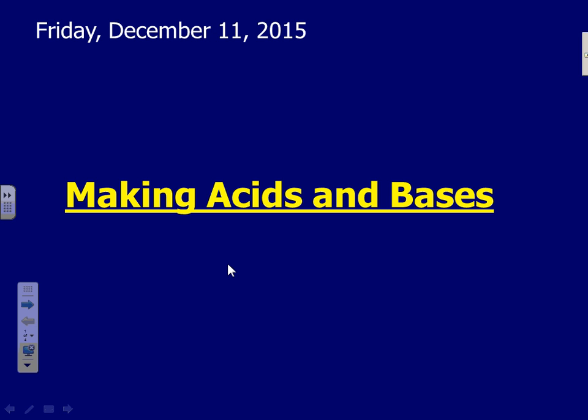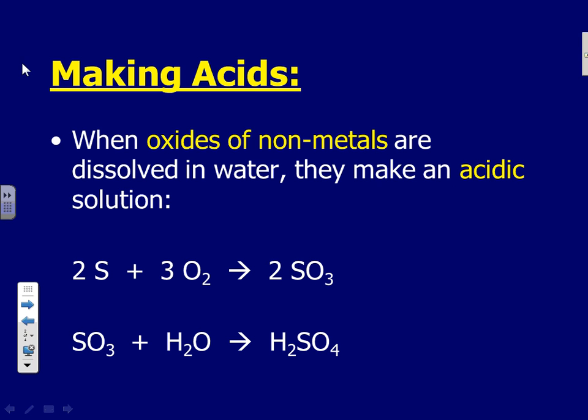So what we want to talk about today is how are acids and bases originally made? Making acids: acids result when the oxides of nonmetals are dissolved in water.